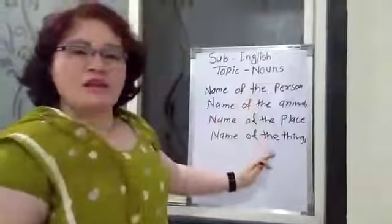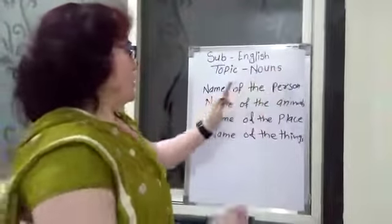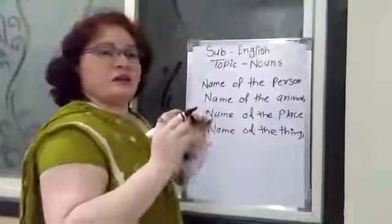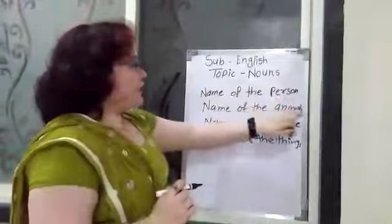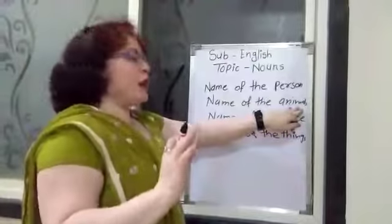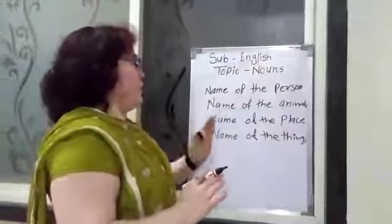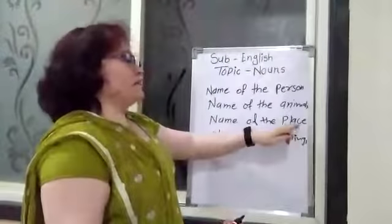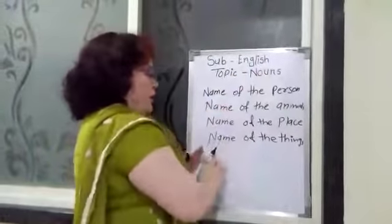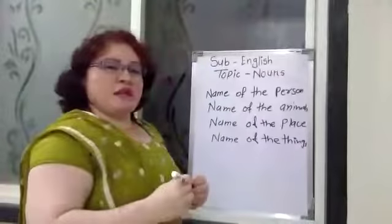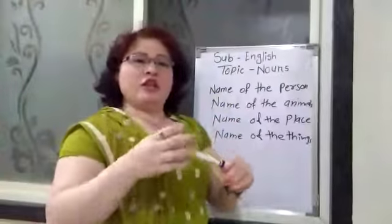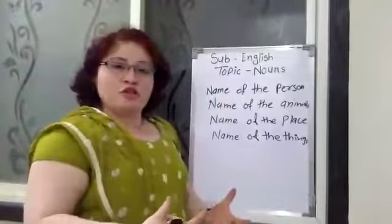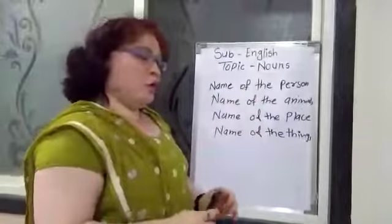Those four things are included in the noun. First, name of the person — any name of a person is a noun. Second, name of the animals — any name of an animal is included in the noun. Third, name of the place, like Amravati — that is also included in the noun. And name of the things — pain, ball, duster, book are all things included in the noun.